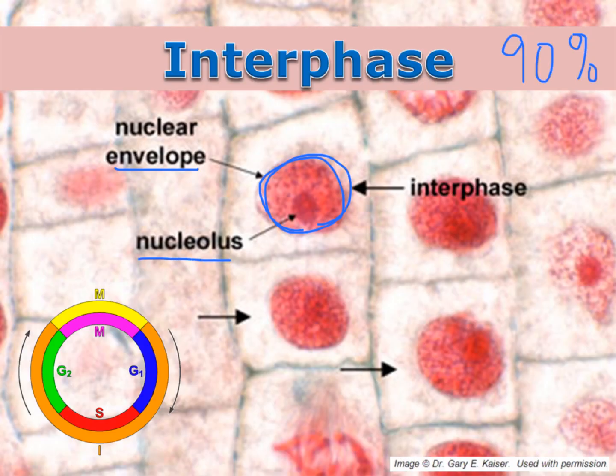You can also still see the nucleolus — that's the region of the nucleus where ribosomes are being made. The cell needs these ribosomes so that it can make proteins.